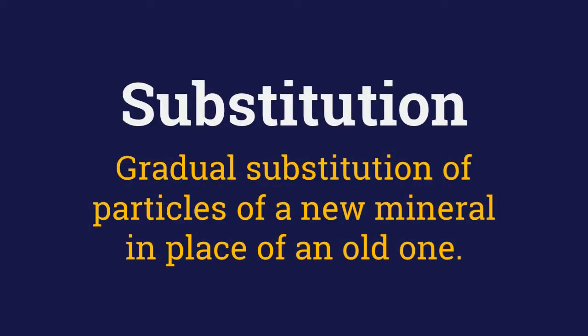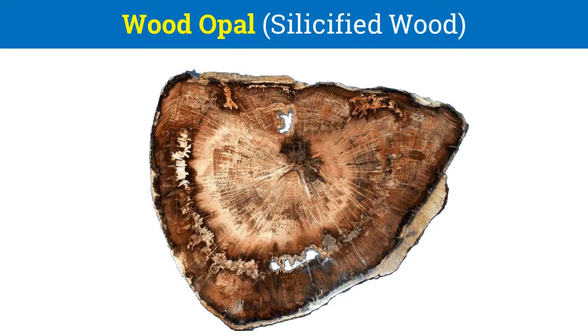Substitution is that type of pseudomorphism in which there is removal of the original material and a simultaneous replacement of it by another material, with no chemical reaction occurring between the two. A common example of substitution is wood opal, or silicified wood, in which each carbon atom of the wood's molecule is replaced by silica. Fossilized pine cones and replacement of a snail shell with emerald are also examples of substitution.